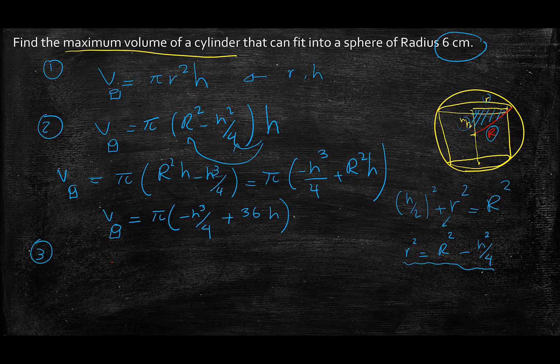Now the last step in order to maximize it is I have to take the derivative of the volume equation and put it equal to 0. That will equal, I'm just going to keep π outside of the brackets since π is just a constant. The derivative of -1/4h³ would be -3/4h² plus the derivative of 36h would just be 36.